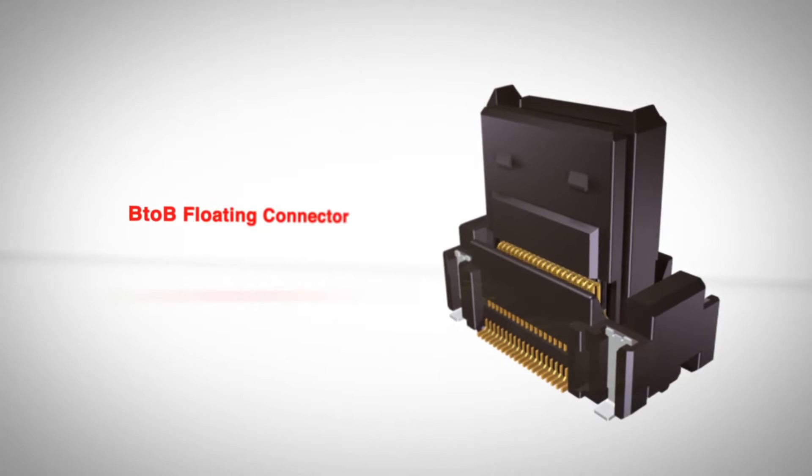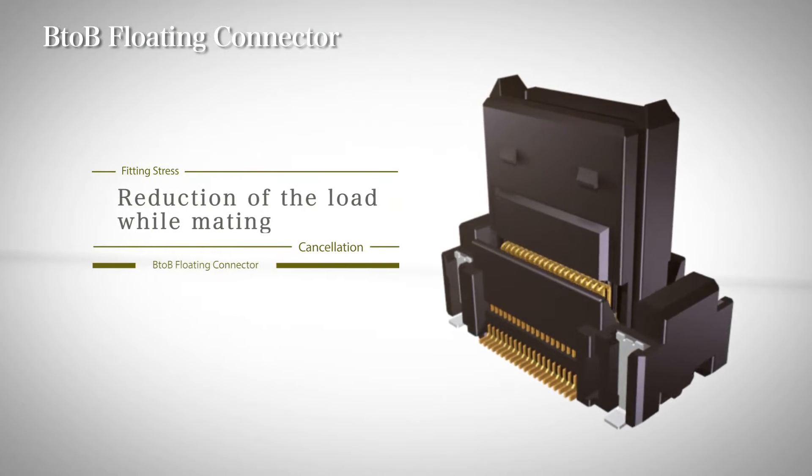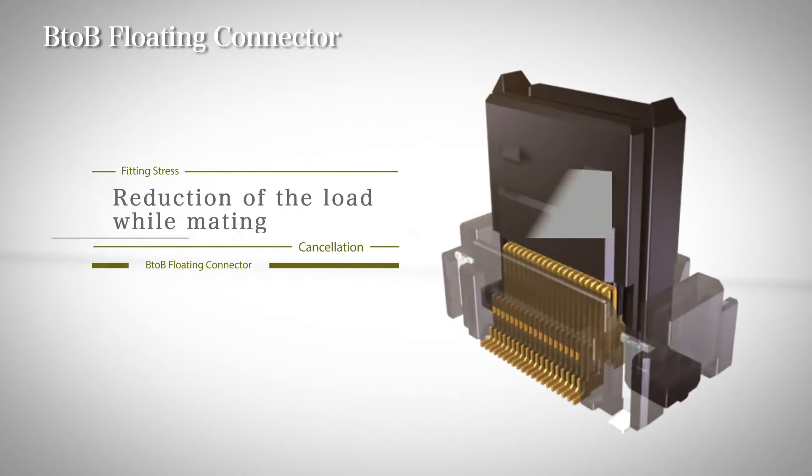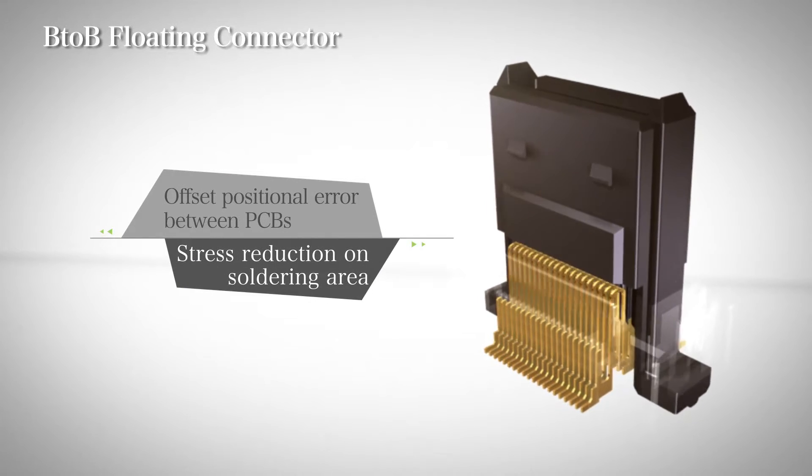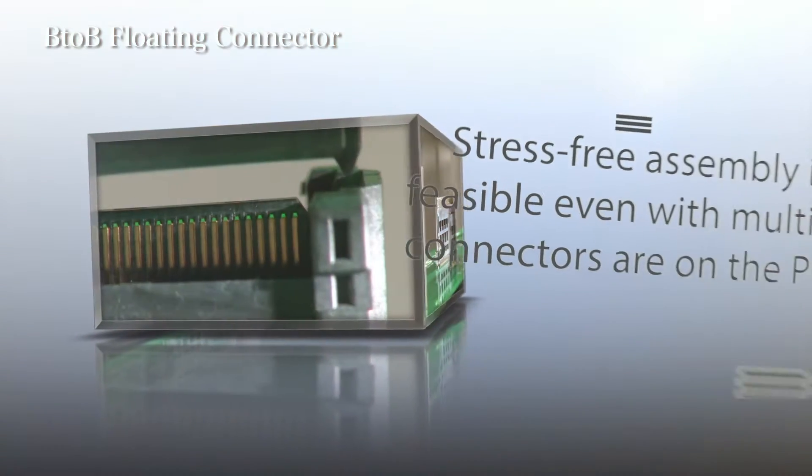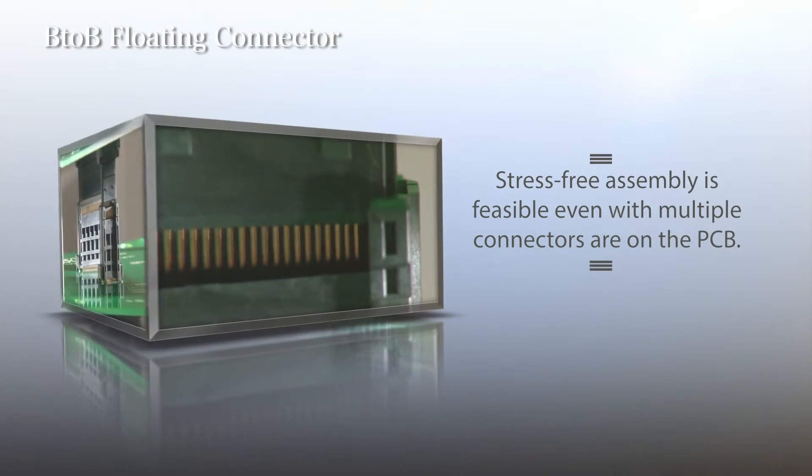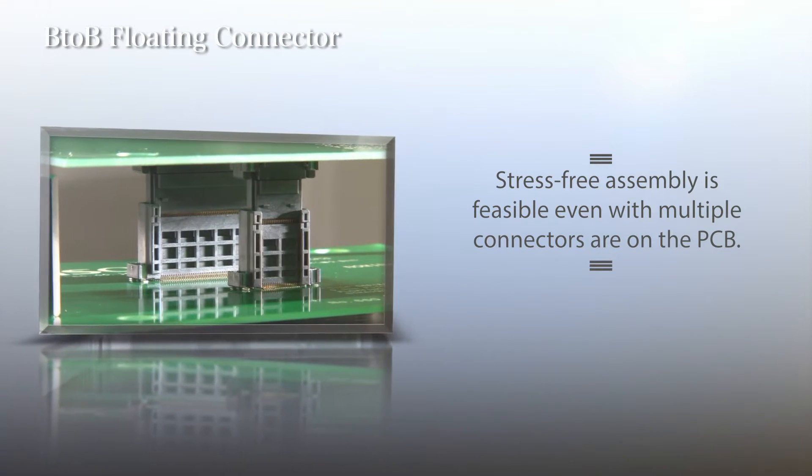ELISO B2B floating connectors lighten the load by the alignment structure. The spring function of contacts offsets the mating positional error and reduces the load on the soldering area. The greatest advantage is that multiple connectors on the PCB will cause no problems while in the assembly process, as the floating function reduces the load.